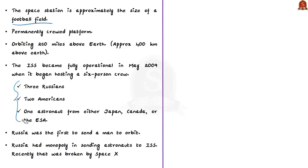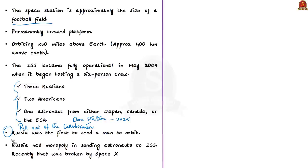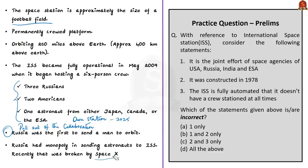Russia is planning to pull out of this rare collaboration and build its own space station by 2025. Russia has a glorious past in space history — it was the first country to send a man to orbit — but in recent times its space programs have lost sheen. Russia had a monopoly in sending astronauts to the ISS, which was recently broken by SpaceX. It is also said that Russian government policies are focusing more on military technologies rather than space.